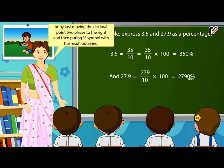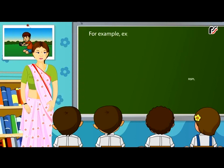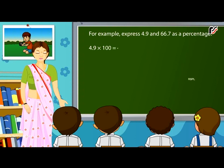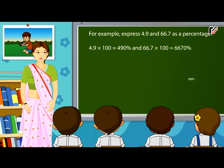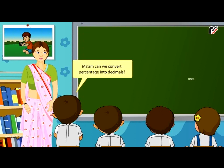We can also find the percentage by multiplying the given decimal number by 100, or by simply moving the decimal point two places to the right and putting the percentage symbol. For example, 4.9 × 100 = 490% and 66.7 × 100 = 6670%.